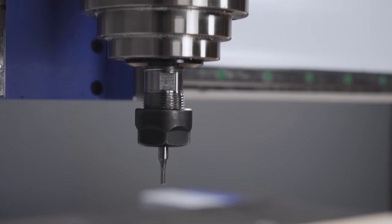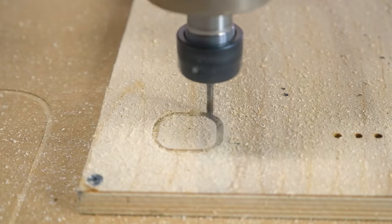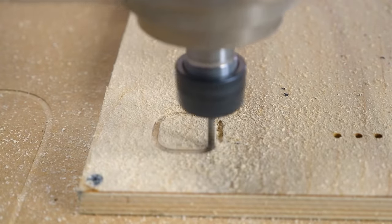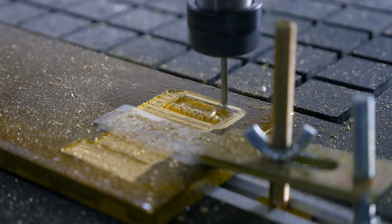With a spindle power of 4.5 kilowatts and a speed of up to 18,000 rpm, this is more than enough to process wood of any hardness and all plastics and composites. Even soft metals can be machined with this machine.